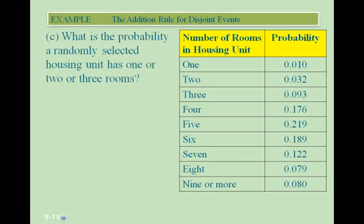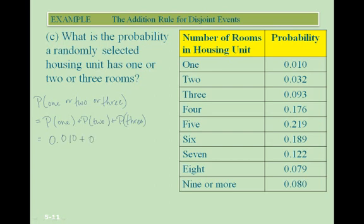Part C: what is the probability a randomly selected housing unit has 1, 2, or 3 rooms? Extending to three values, P(1 or 2 or 3) = P(1) + P(2) + P(3). From the table: 0.010 + 0.032 + 0.093 = 0.135. So the probability that a housing unit has 1, 2, or 3 rooms is 0.135.